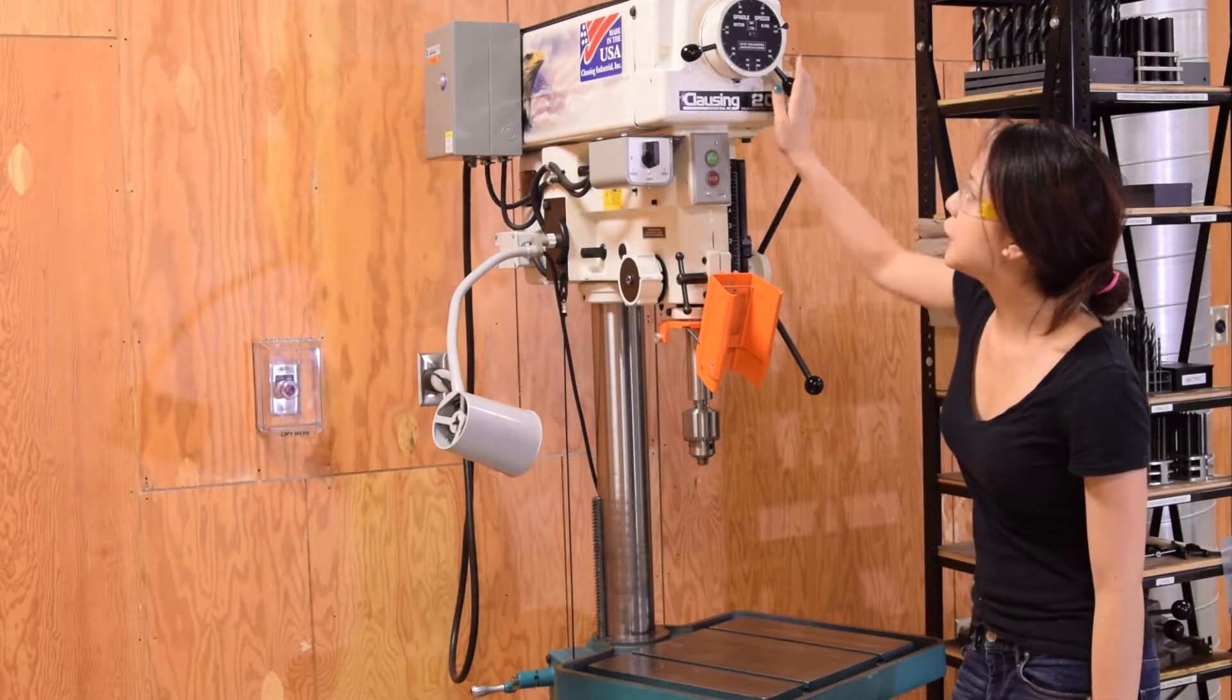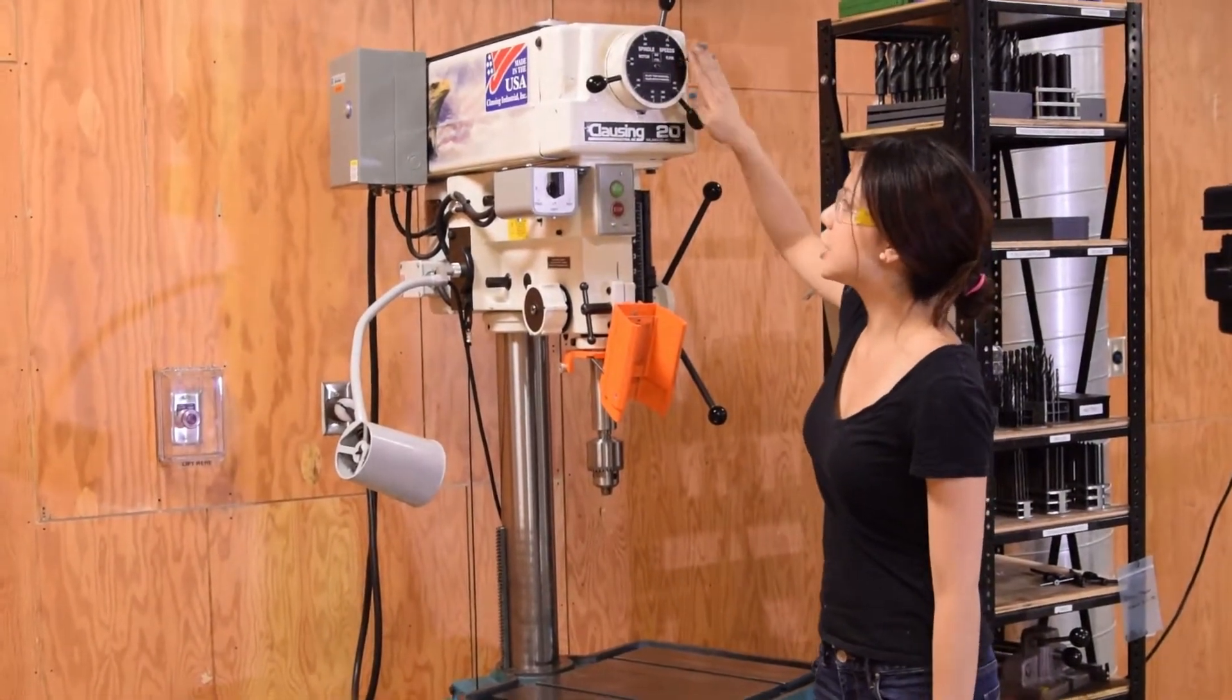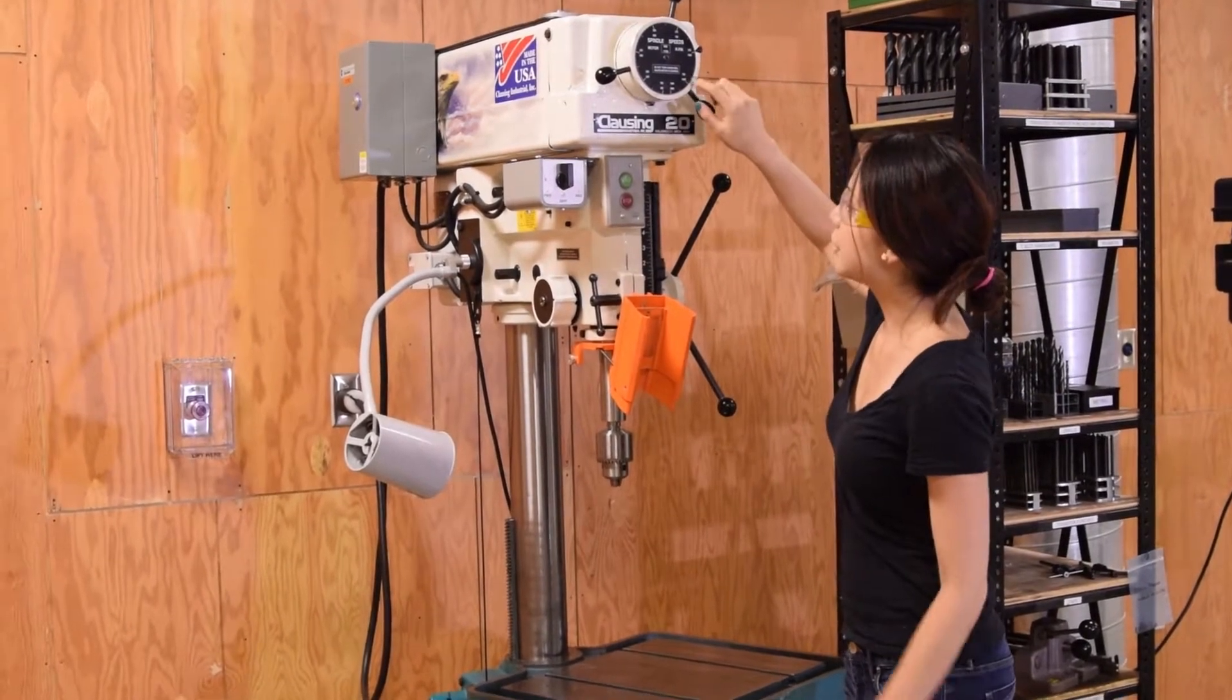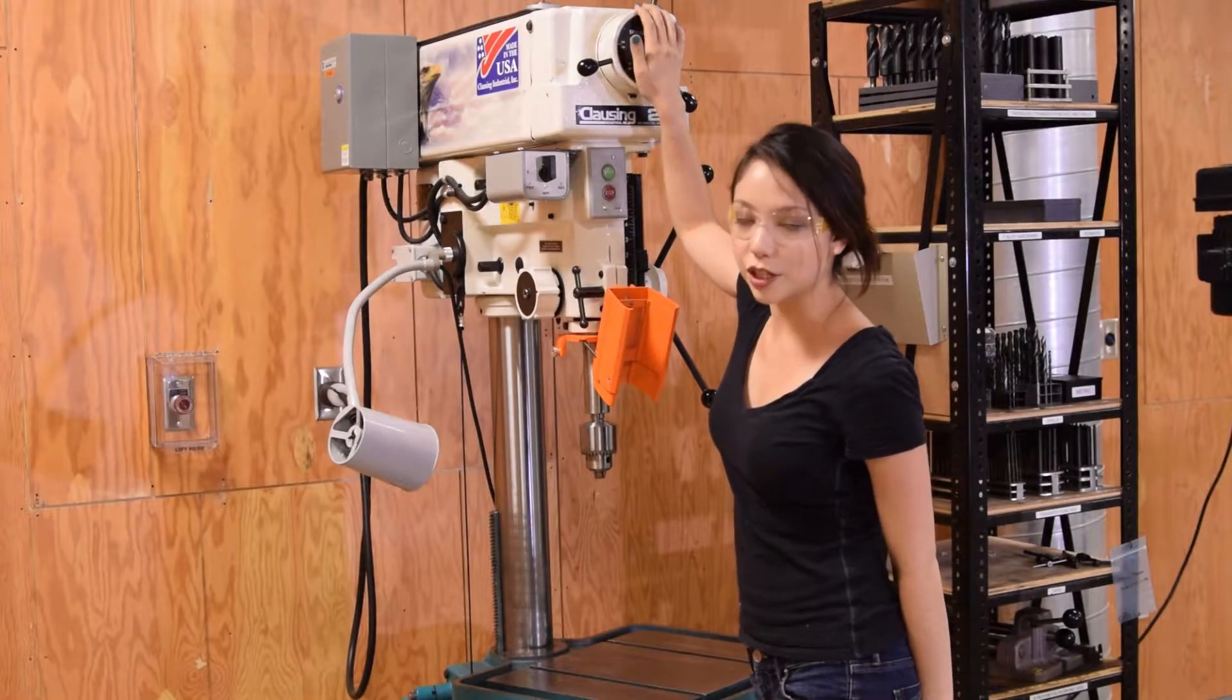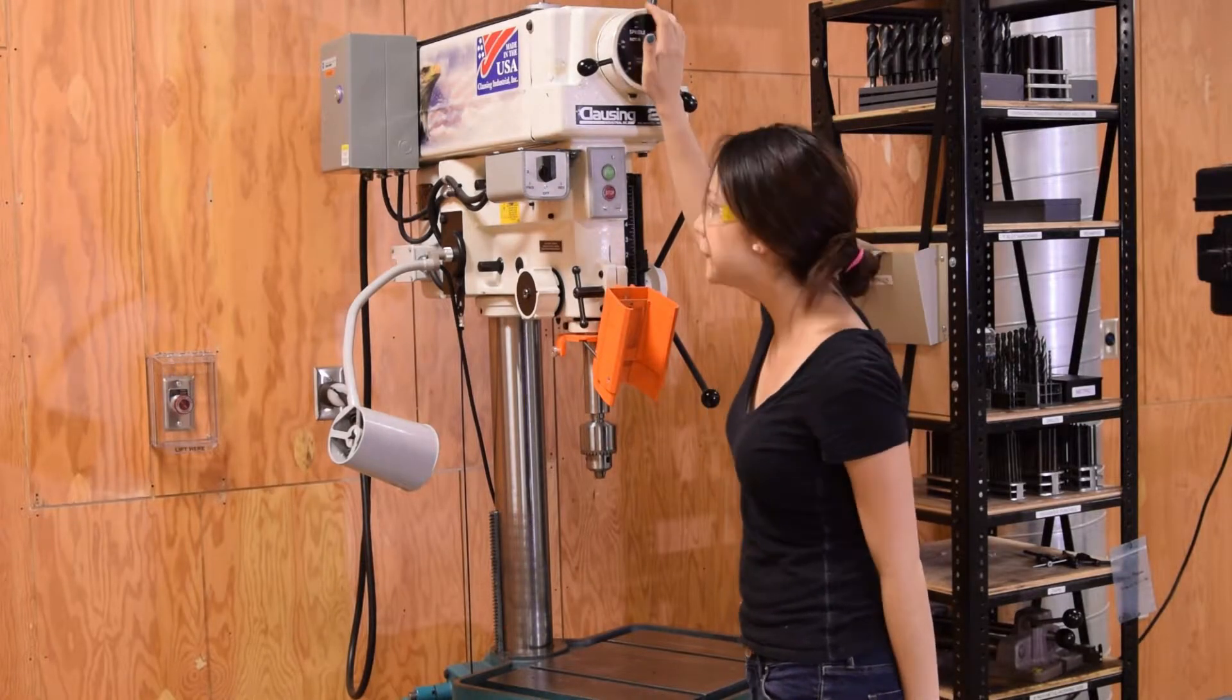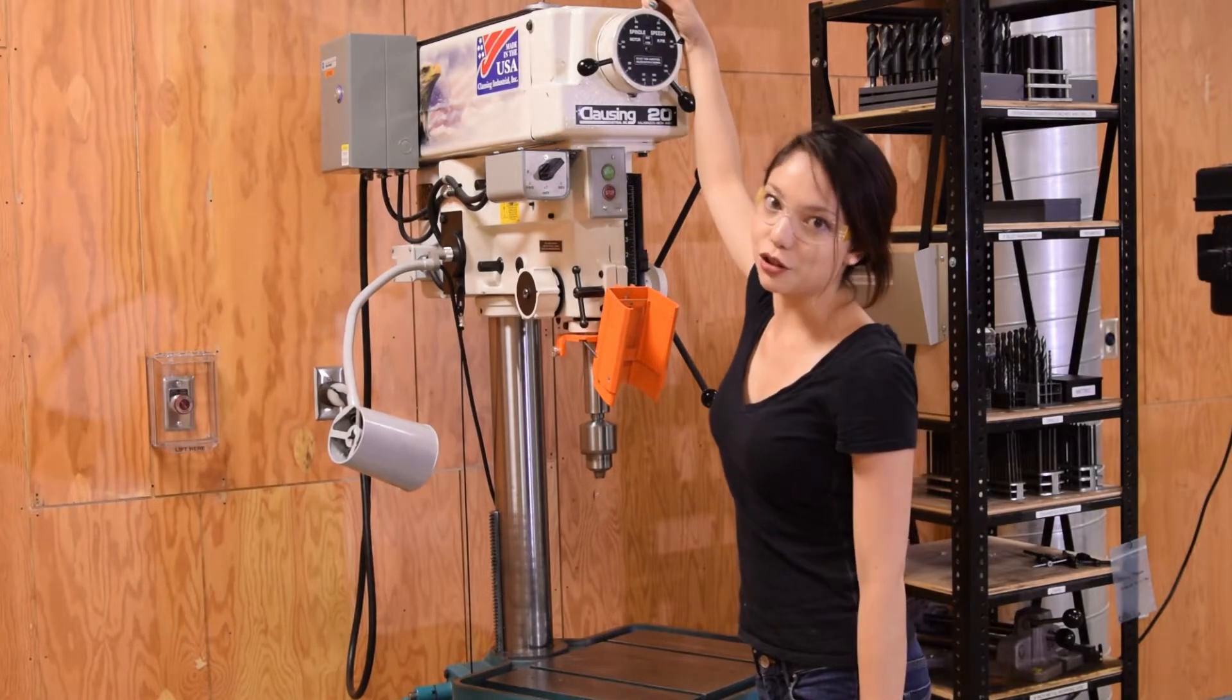The other thing is that instead of changing the speed with the pulleys like I showed you on the Jet, you can change the speed automatically here. So the key to anything that automatically changes the speed for you, whether it's a drill press, whether it's a bandsaw, whatever, is that it should always be running as you change it.